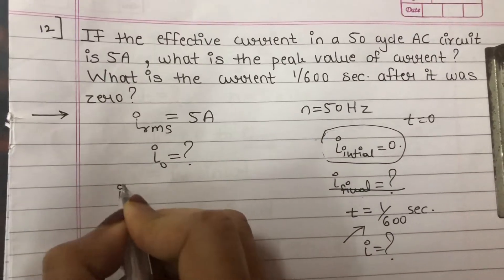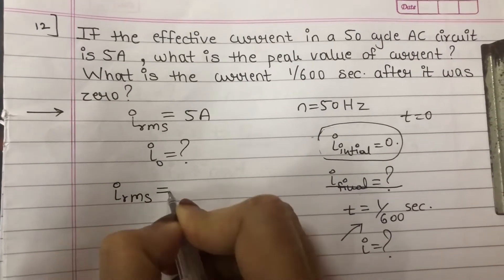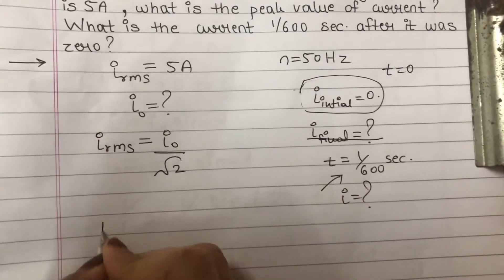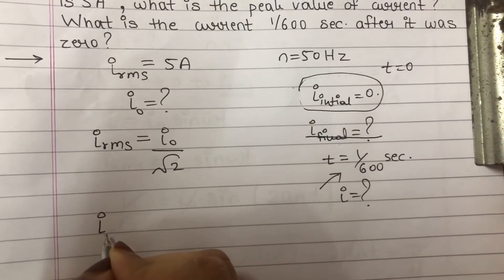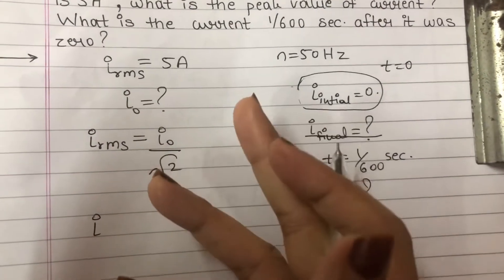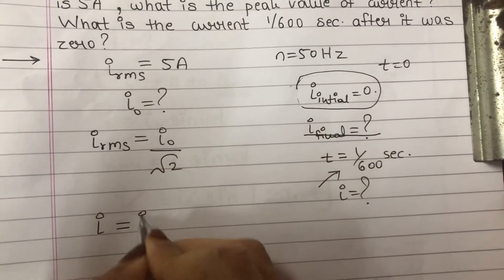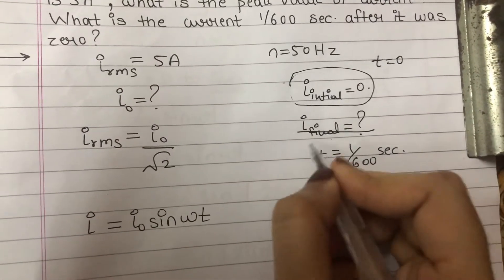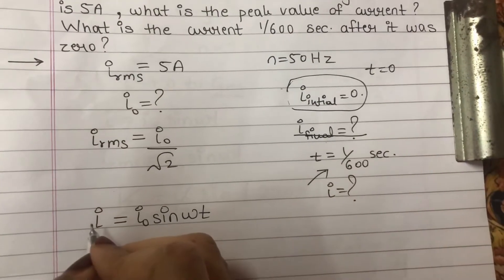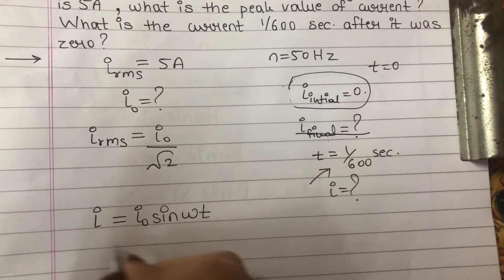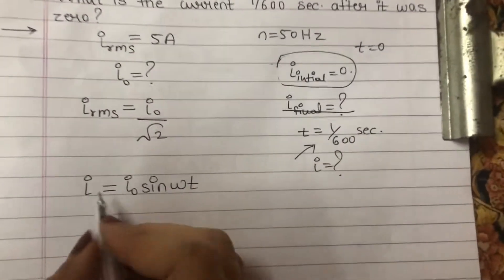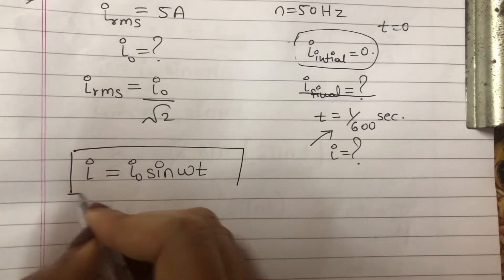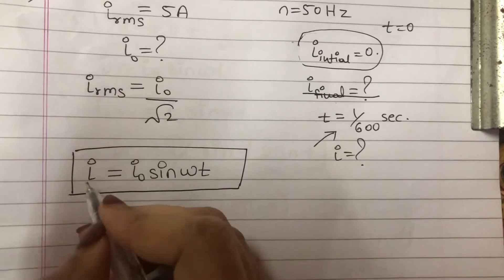Now, we know that I_rms is equal to I₀ upon root 2. Now, first the instantaneous value of the current, means at that particular instant, at that moment. So, I is equal to I₀ sin omega t. So, this is the equation, this is the formula that is known as instantaneous value of the current.